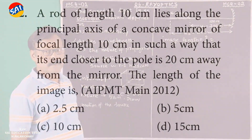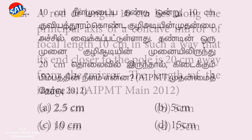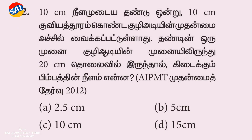Question: A rod of length 10 cm lies along the principal axis of a concave mirror of focal length 10 cm, in such a way that its end closer to the pole is 20 cm away from the mirror. The length of the image — options: 10 cm, 4 cm, 10 cm, 1 cm.